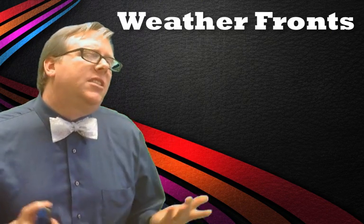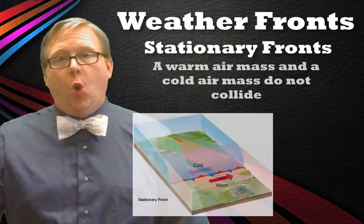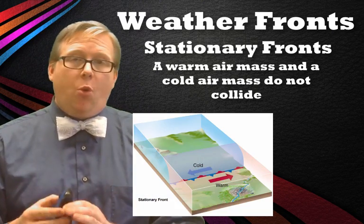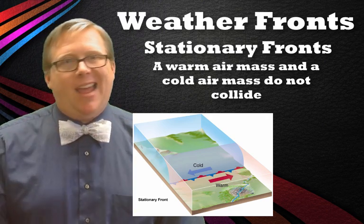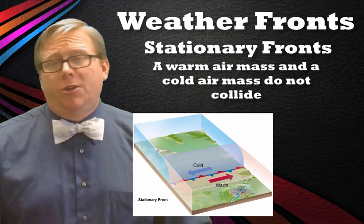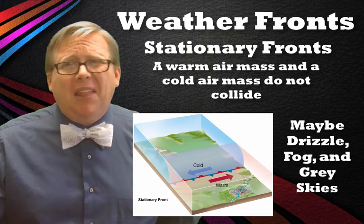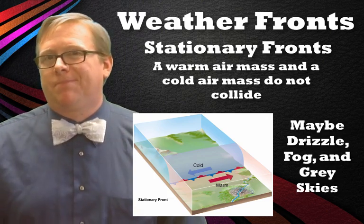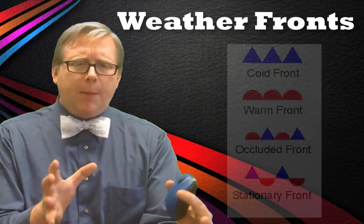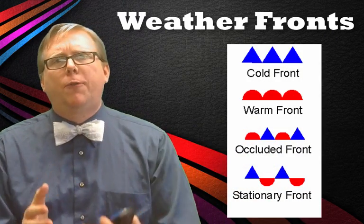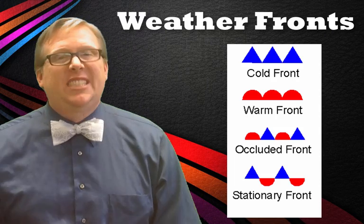And lastly is the stationary front. Of all the fronts, this is the most boring. This is where a cold air mass and a warm air mass meet and just sit there — nothing really happens. You might get some drizzle, kind of like a warm front, but other than that it's just kind of boring. So those are our four types, and knowing what type of air mass is moving in and what was there before, you can predict what type of weather you're going to see.